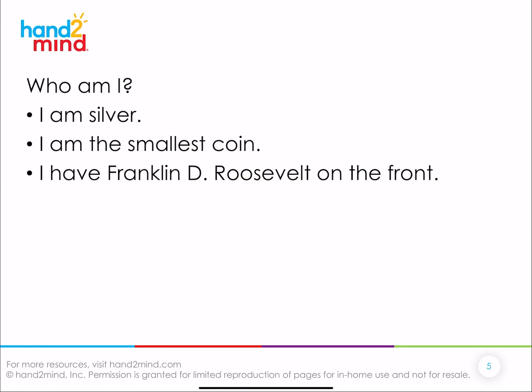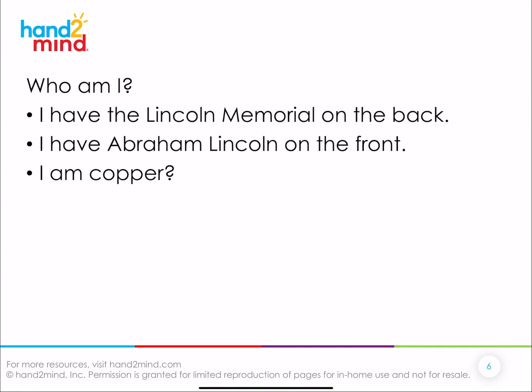So let's play a game. Who am I? I am silver. I am the smallest coin, and I have Franklin D. Roosevelt on the front. Who would that be? Did you say this one? What is this called? The dime. That's right, it's the dime. It's the smallest coin we have and it has Franklin D. Roosevelt on the front. Great job.